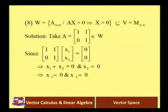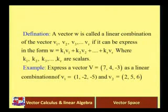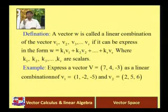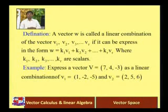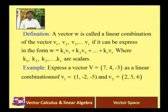That is quite a good and interesting example, and all the examples are very important. Some examples are asked in GTO question papers. The next topic is linear combination. A vector W is called a linear combination of vectors v1, v2, ..., vr if it can be expressed in the form W = k1·v1 + k2·v2 + ... + kr·vr where k1, k2, ..., kr are scalars.